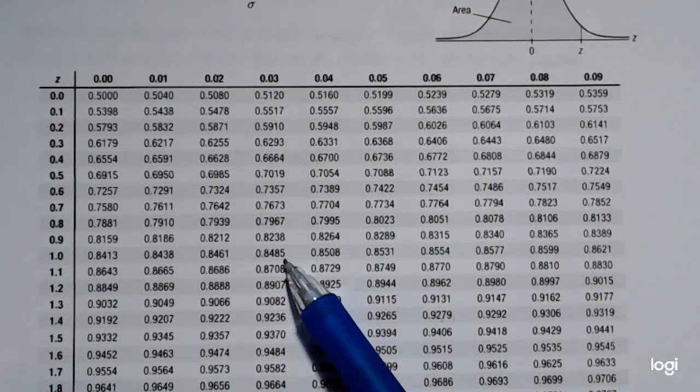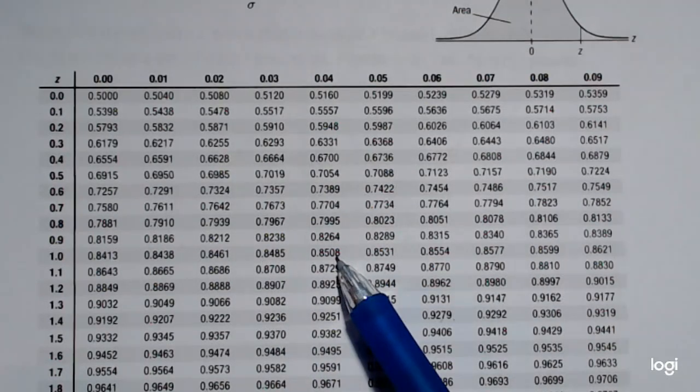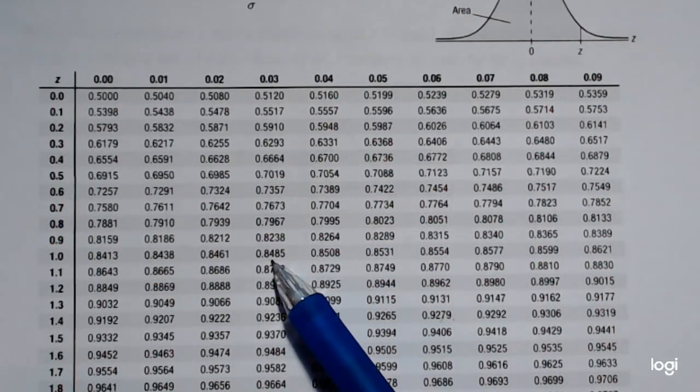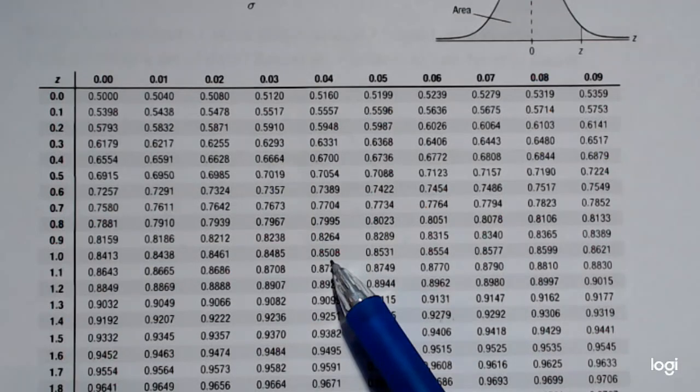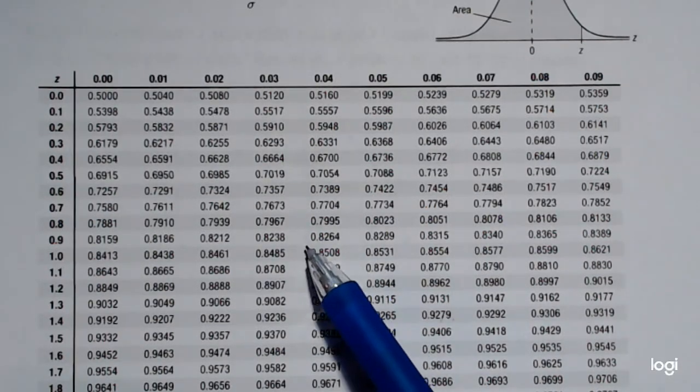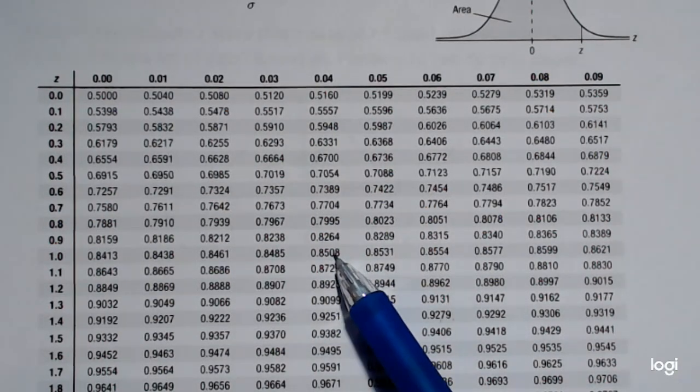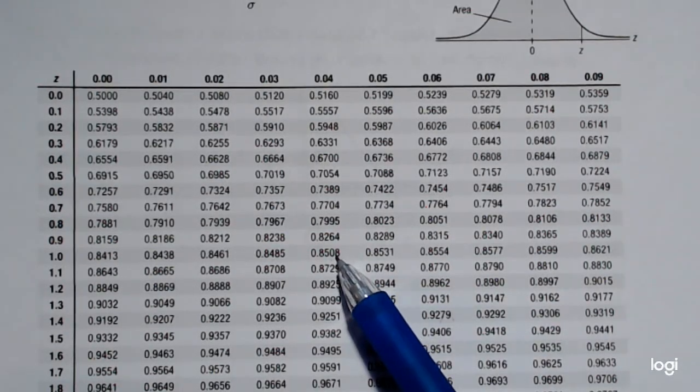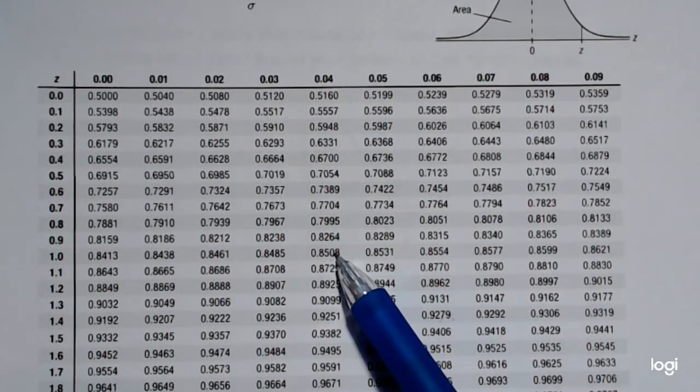So I don't have 0.85 exactly in the table. I have a 0.8485 and a 0.8508. This 0.8508 is closer to 0.85, so I'm going to use this one.